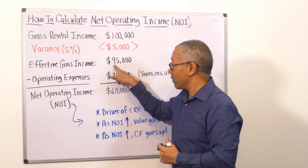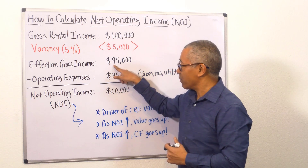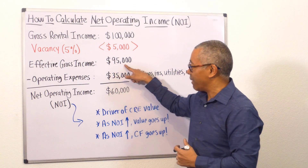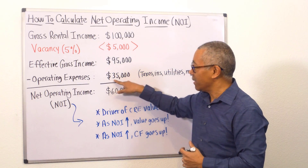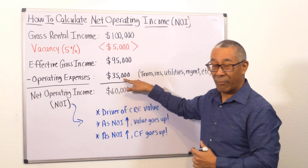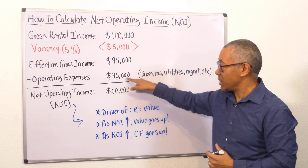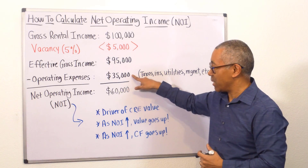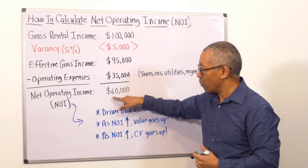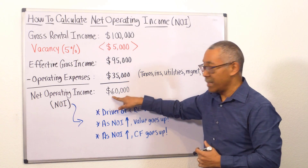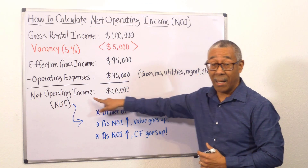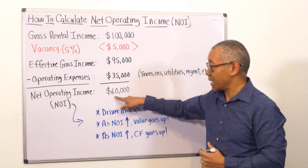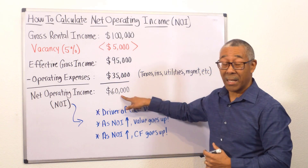So your effective gross income of $95,000 minus $35,000 in expenses equals the net operating income of $60,000.